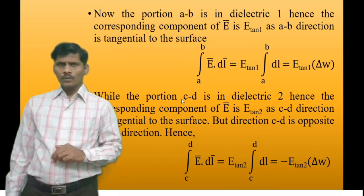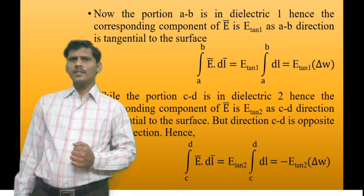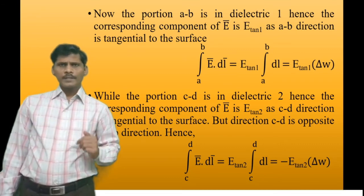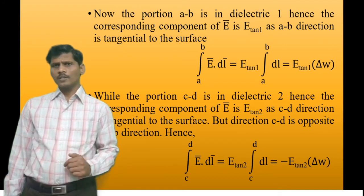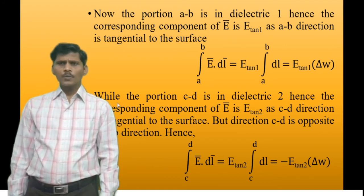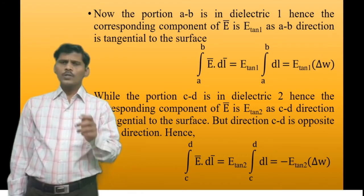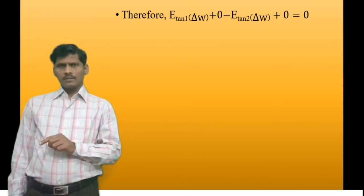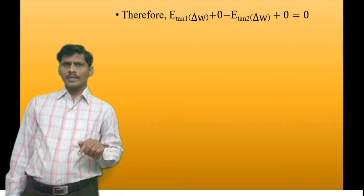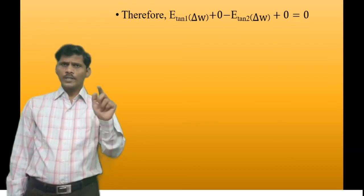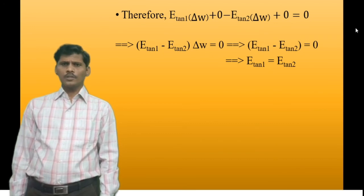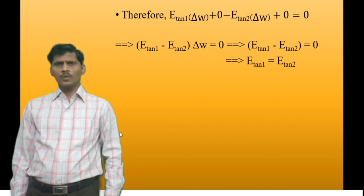The path C to D is in region 2, where the tangential component is E-tangential-2, and it is opposite to path A to B. Substituting all path components into the closed line integral expression, we get: E-tangential-1 times delta-W, plus 0 (from path B to C), minus E-tangential-2 times delta-W, plus 0 (from path D to A), equals 0. This simplifies to E-tangential-1 minus E-tangential-2 times delta-W equals 0, giving E-tangential-1 equals E-tangential-2.